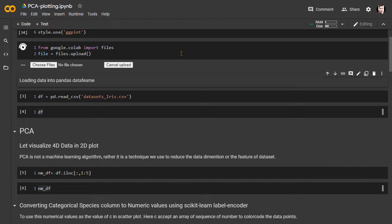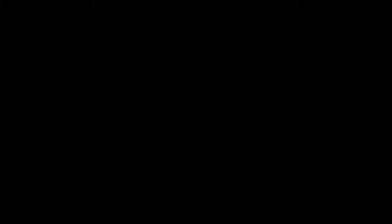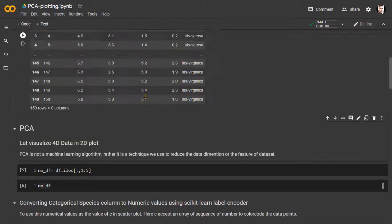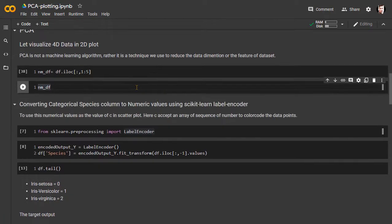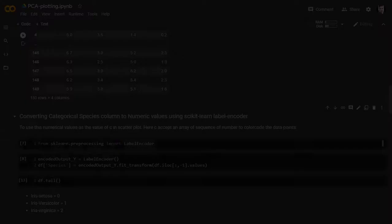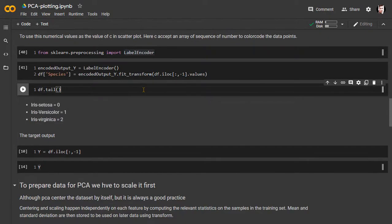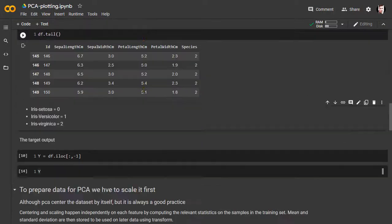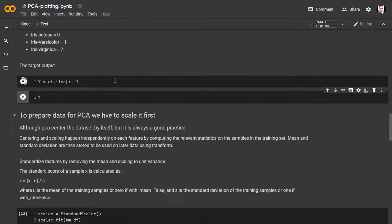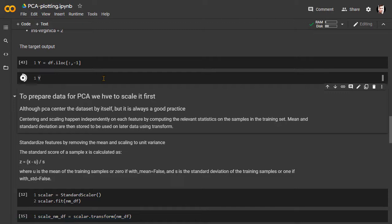To apply the PCA, we need to separate the numeric columns in the dataset. Here, we are converting the categorical species column to numeric values, to assign the C value in the plt.scatter function, as a sequence of colors. This way we will be able to color code the different categories of principal components.